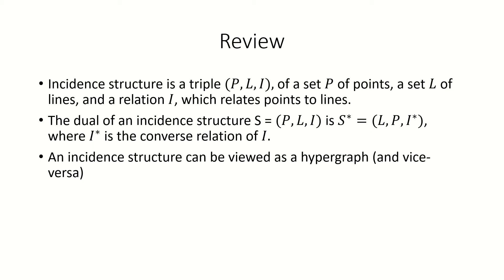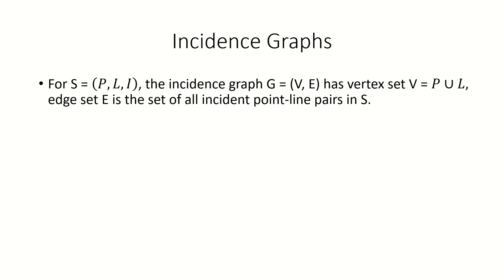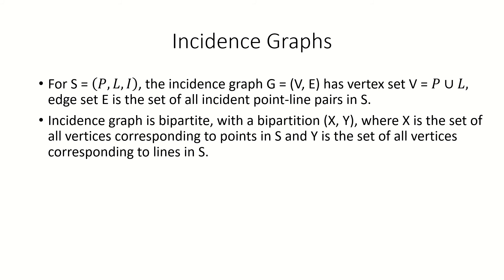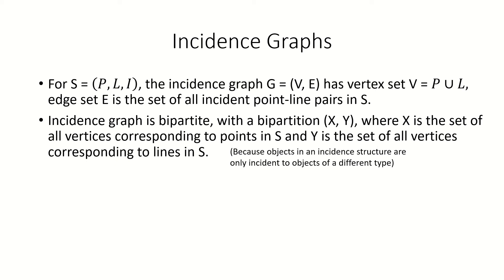But there are ways we can represent incidence structures with ordinary graphs too. For an incidence structure S, we can generate the incidence graph of S by creating a graph with a vertex corresponding to each point and to each line in our incidence structure. The edge set of this graph is the set of incident pairs of points and lines in our structure — we link two vertices when they are incident objects in our incidence structure. The incidence graph is always bipartite, because we can partition it into two parts X and Y, where X consists of vertices representing points and Y consists of vertices representing lines, such that the only adjacencies are between vertices in different parts. That's because objects are only incident to objects of a different type.